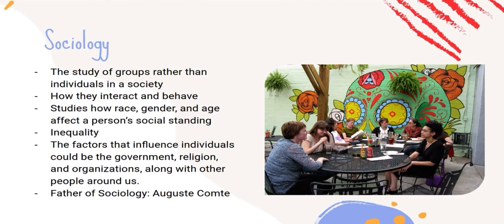The father of sociology is Auguste Comte. He came up with the idea of sociology during the French Revolution, which was basically a conflict between the monarchy and the working class. The working class wanted a better lifestyle, so they overthrew the monarchy, causing great distress in France. Auguste Comte developed sociology in order to create more rational behaviors among people.